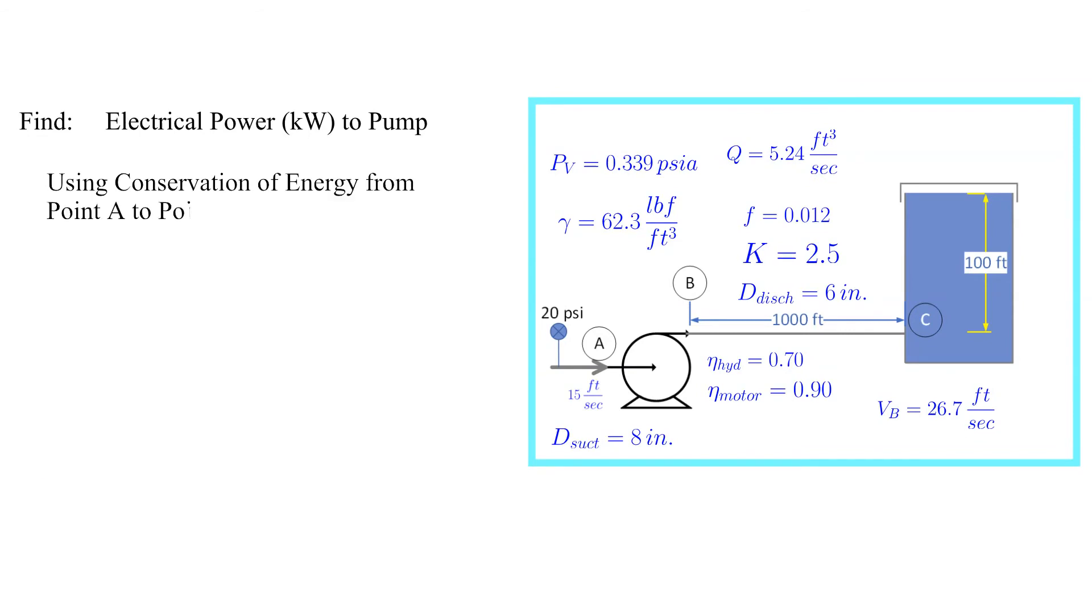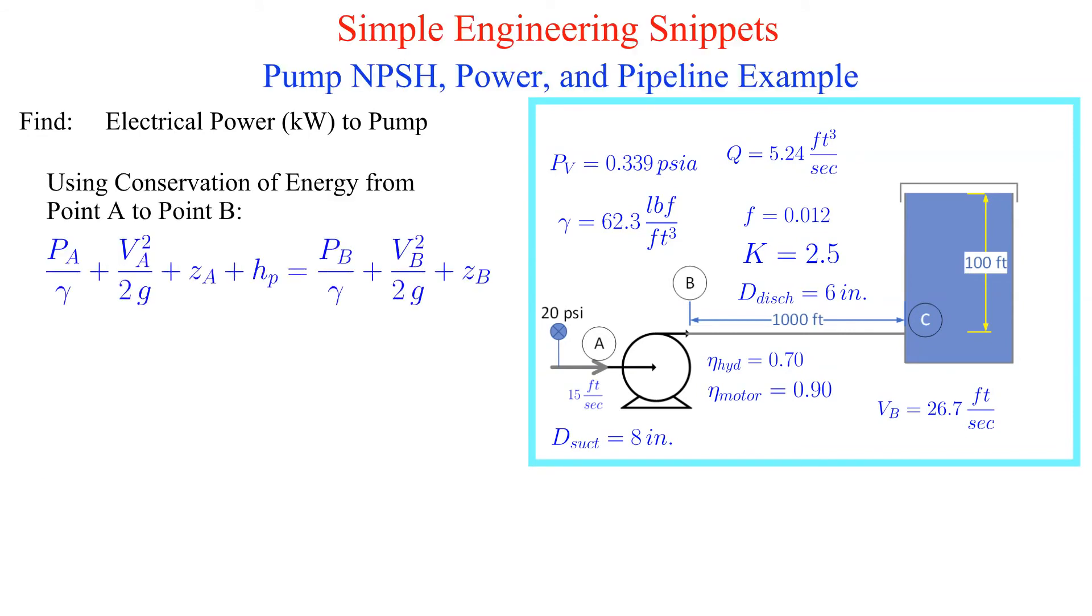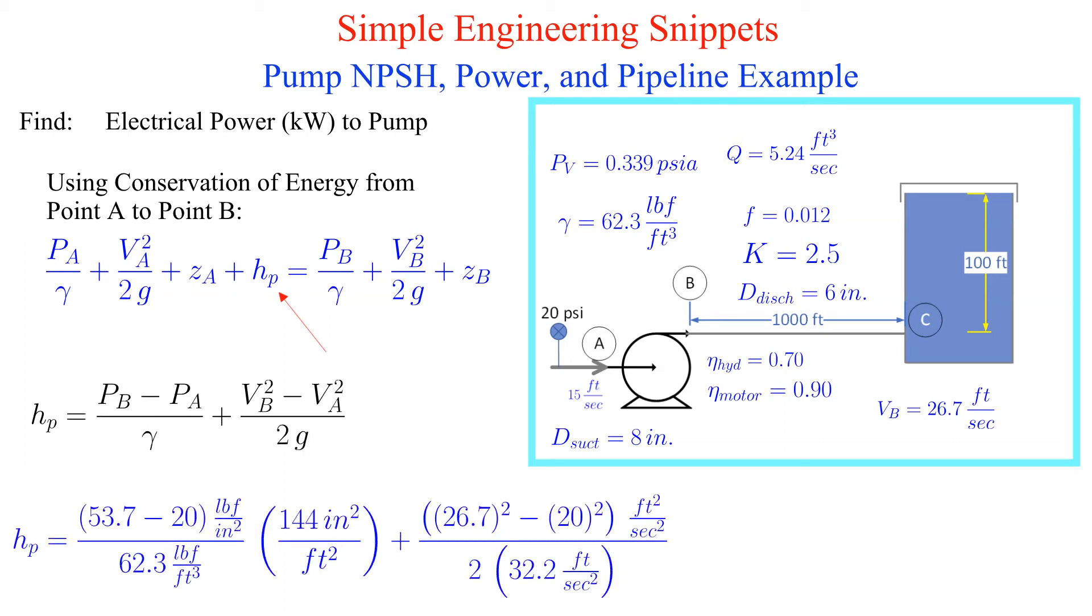Now let's find the electrical power to the pump. We will again use conservation of energy, this time applied from the pump suction to the pump discharge. You will notice that the pump head term is on the left side of the equation. Physically this equation says the energy at the pump suction plus the energy added by the pump equals the energy at the pump discharge. We solve the equation for the pump head and plug in the numbers and obtain that the pump head is 82.8 feet of water.